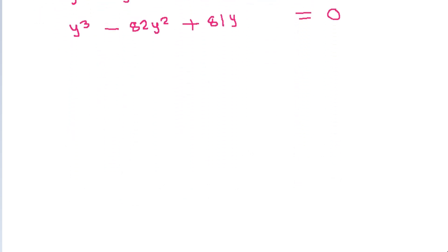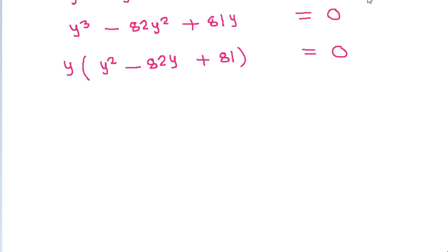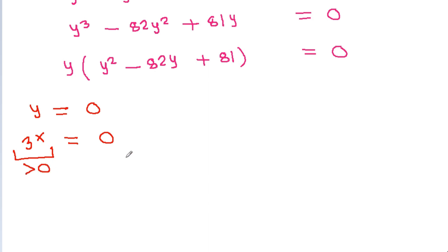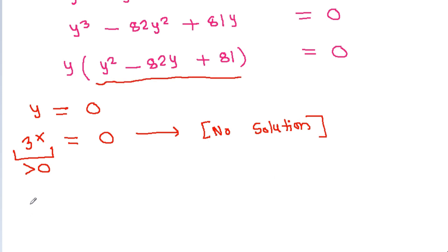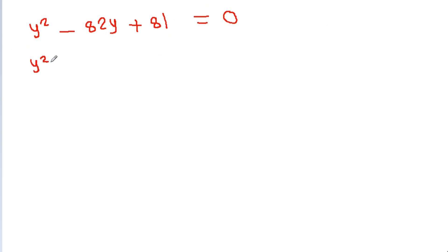Factoring: y(y² - 82y + 81) = 0. Either y = 0, but since y = 3^x and 3^x is always greater than 0, y = 0 has no solution. So we work with y² - 82y + 81 = 0, which factors as (y - 1)(y - 81) = 0.